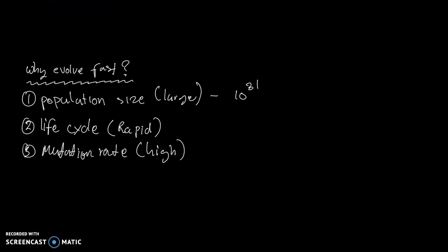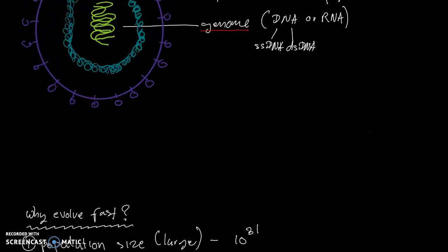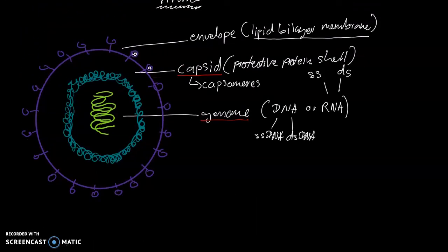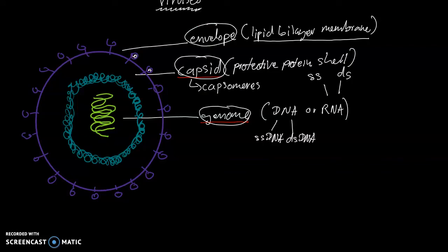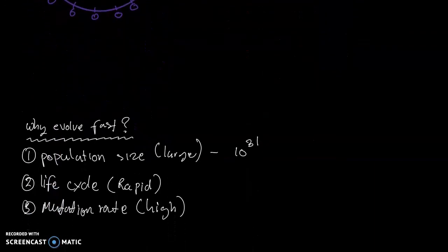So to recap, all viruses will have a genome, and compositing the genome is a structure called the capsid that protects the genome. And we learned that some viruses will have an additional layer called the envelope. And we learned the factors and the reasons that allow viruses to evolve fast.